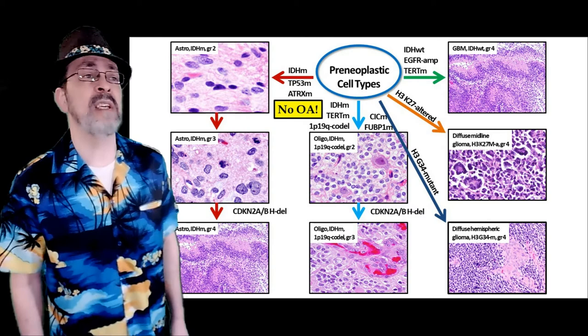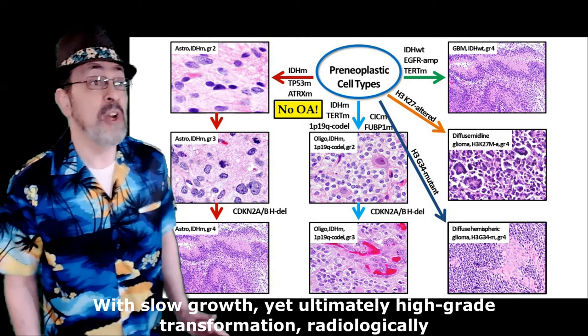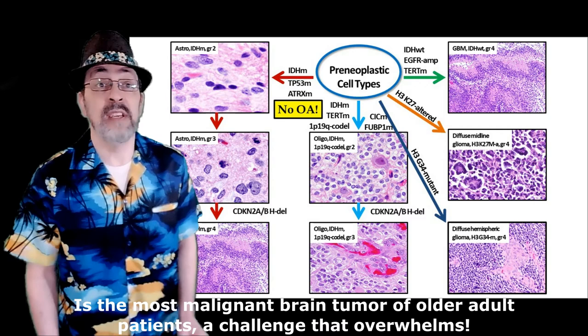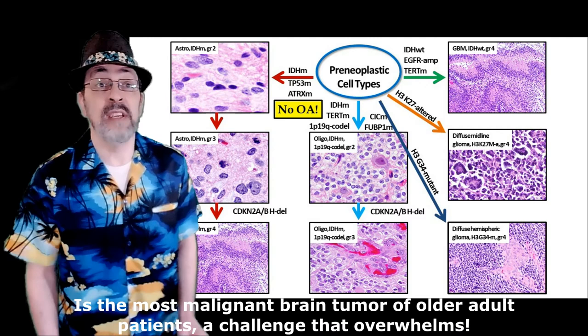IDH mutant tumors are much better prognostically, with slow growth yet ultimately high-grade transformation radiologically. IDH wild-type glioblastoma, or GBM, is the most malignant brain tumor of older adult patients, a challenge that overwhelms.